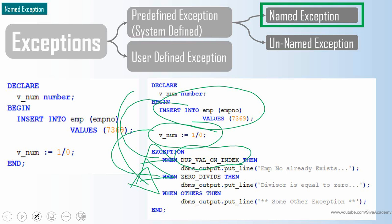Obviously we will not be able to handle all possible exceptions in the program. Whatever anticipated exceptions we can handle explicitly in the exception handling block. For the rest, we use OTHERS as the default category — whatever unhandled exceptions will automatically go there, and if OTHERS is present the program will be gracefully terminated.